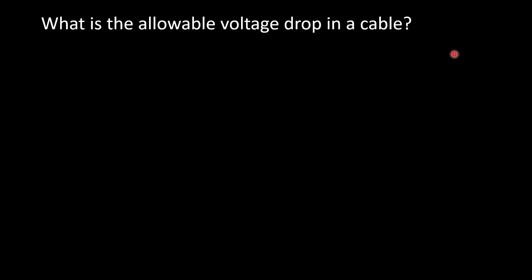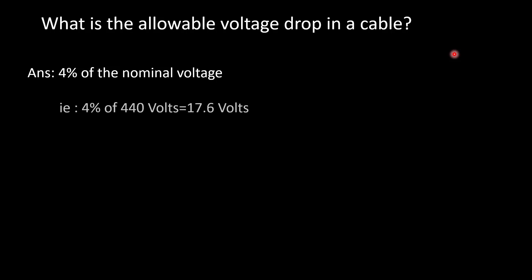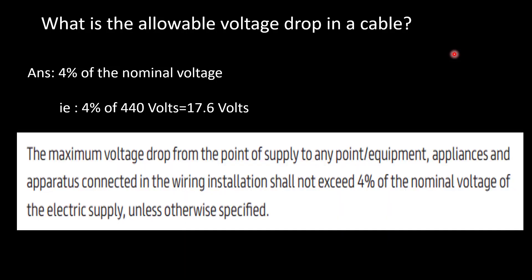What is the allowable voltage drop in a cable? The answer is 4% of the nominal voltage. For example, if the nominal voltage is 440V, then 4% of 440V equals 17.6 volts — that is the maximum allowable voltage drop. As per DEWA regulation: the maximum voltage drop from the point of supply to any point, equipment, appliance, or apparatus connected in the wiring installation shall not exceed 4% of the nominal voltage of the electric supply, unless otherwise specified.